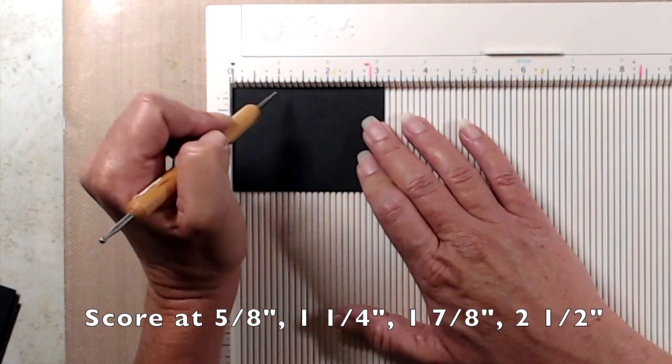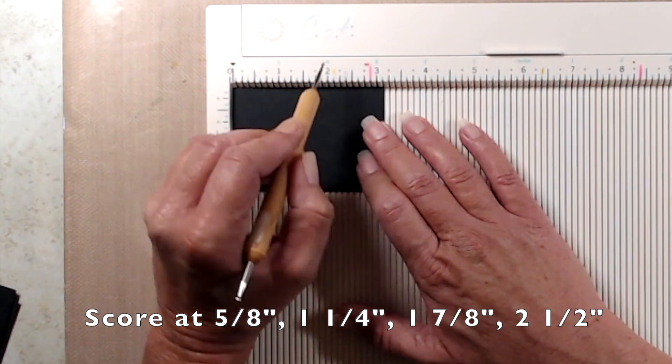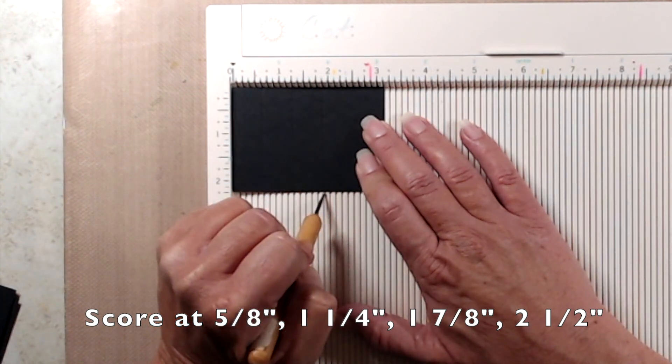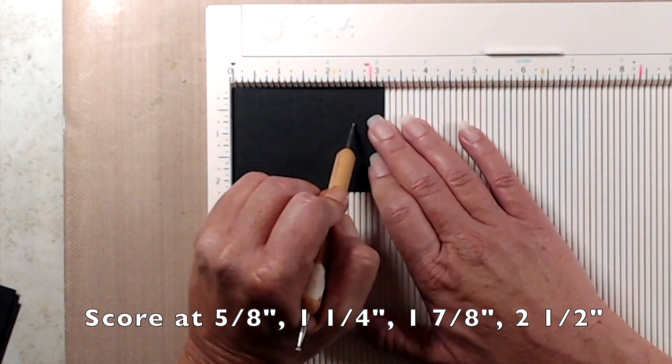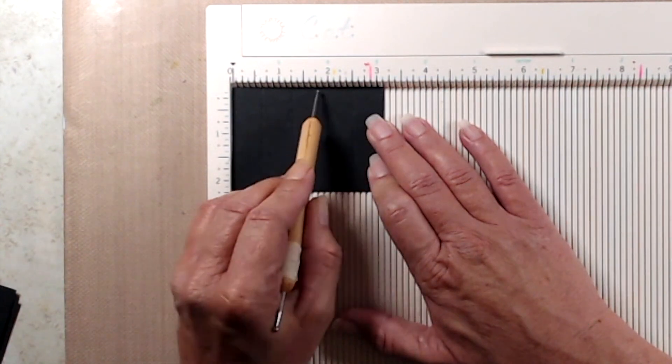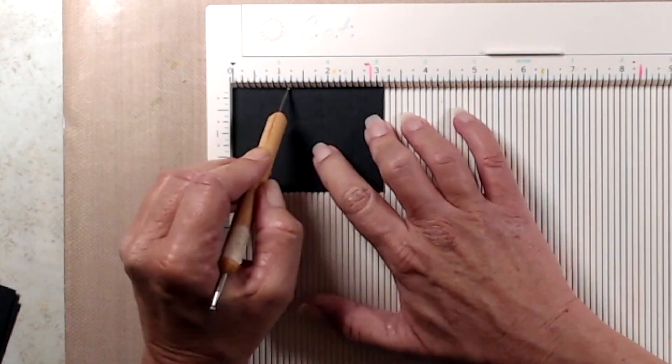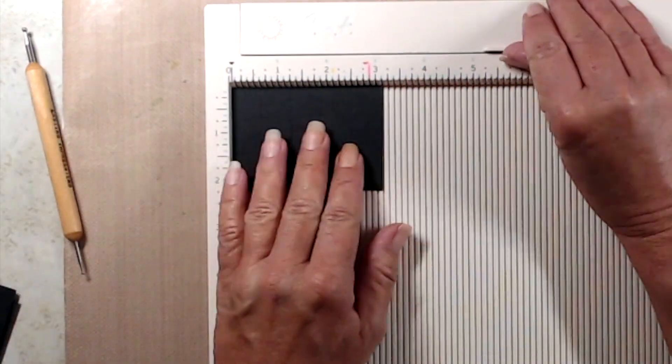One and a quarter inch, one and seven eighths inch, which is one notch below the two inch mark, and then at two and a half inches. And you do need to make three of these little test tube sleeves.